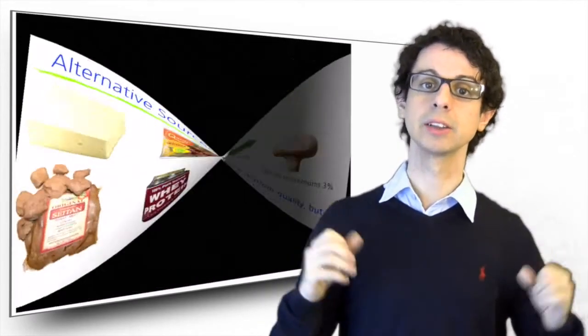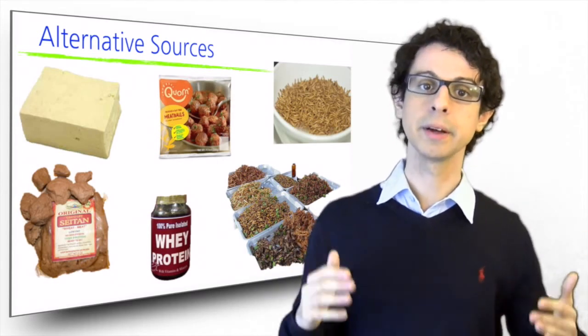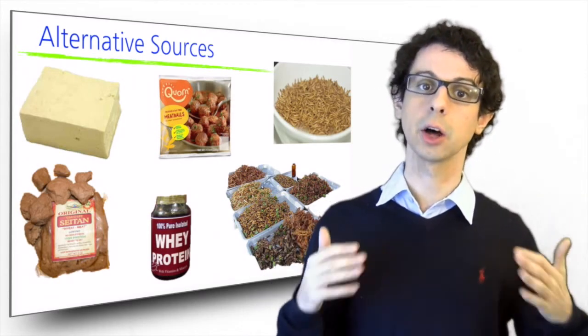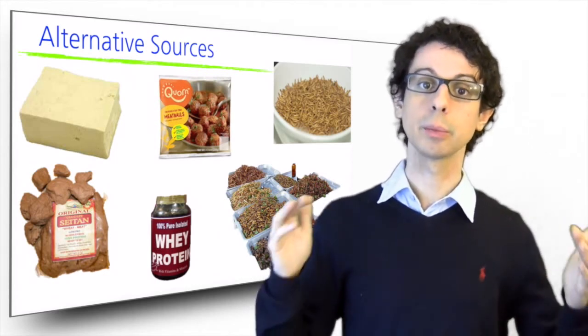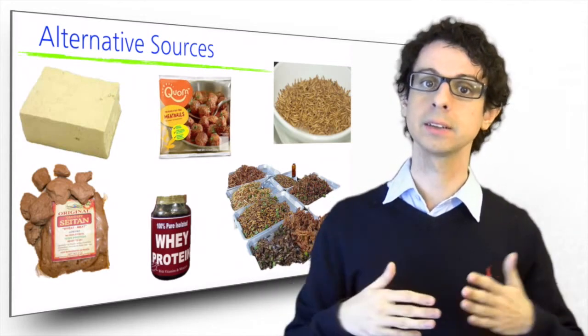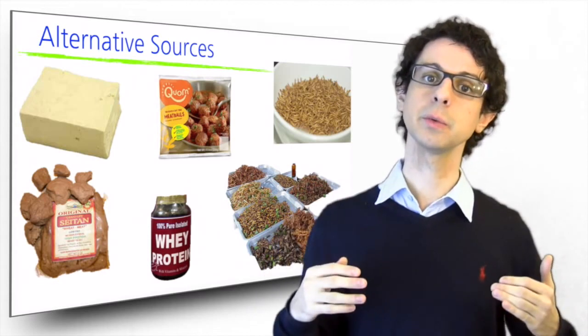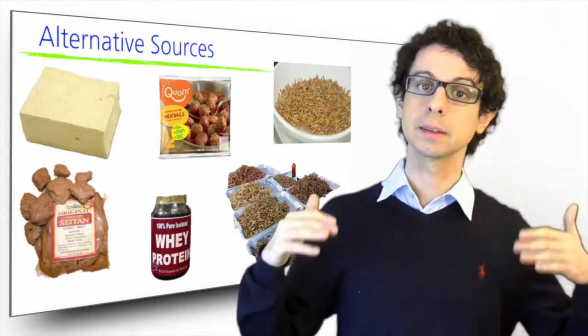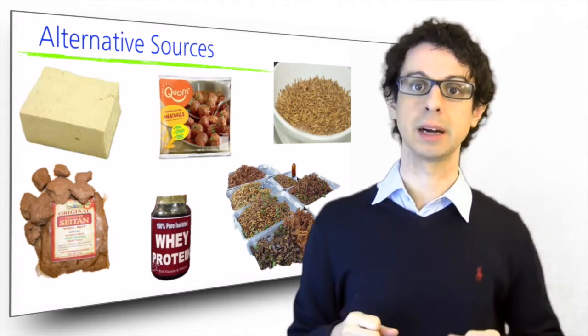And then we have some alternative sources of proteins. Tofu from soy, tempeh from soy, Quorn from a fungus that has a lot of fairly good protein, seitan made from wheat's gluten, protein isolates such as milk's whey proteins, egg whites, and soy. And then let's not forget that in other parts of the world people will eat insects, bugs and larvae, good sources of protein, cheap and pretty much tasteless.